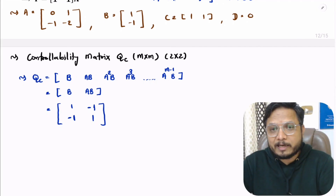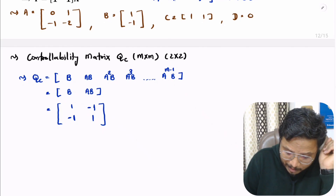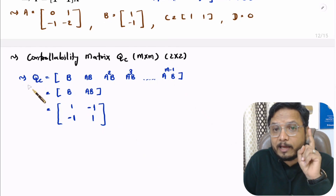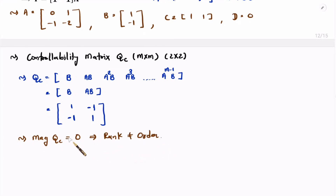To identify controllability, we need to find the rank of Q(C) by computing its magnitude. The magnitude of Q(C) is 1×1 − (−1)×(−1) = 0. Since the magnitude is 0, the rank is not equal to the order, and we can say the given system is not controllable.